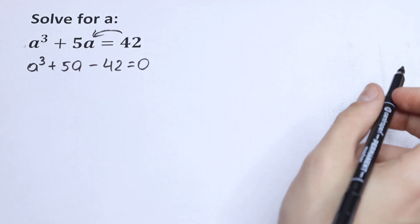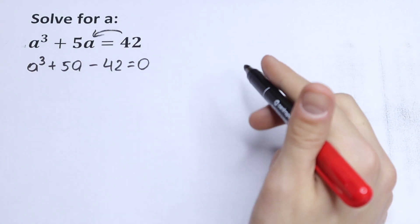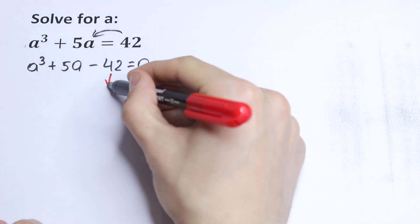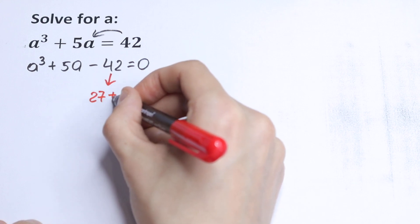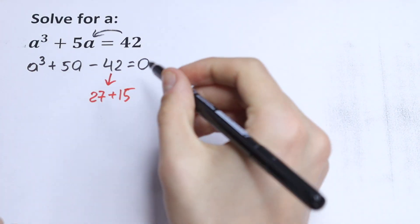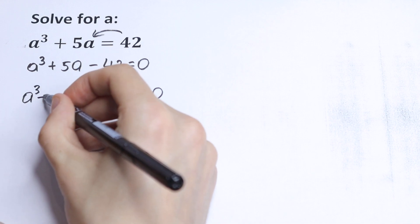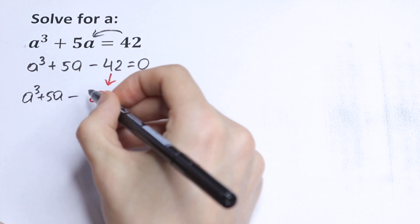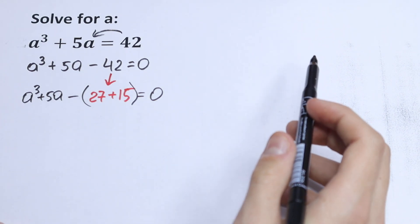What we're going to do next? Let's write this 42 as 27 plus 15. So this 42 let's write as 27 plus 15. Okay, let's write equal to 0 and let's write this a³ plus 5a minus this 42, let's write as 27 plus 15.